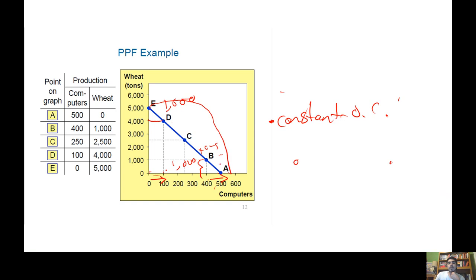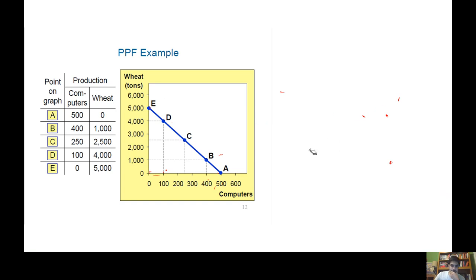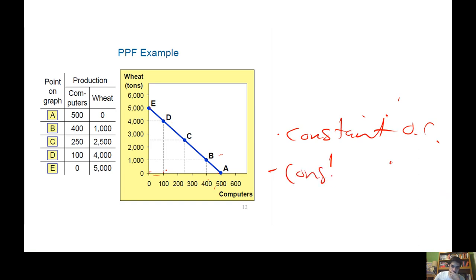Not all PPFs are linear — this is a very unrealistic PPF. A more realistic PPF would be one that's bowed outwards or bowed inwards. We'll talk about why they might be bowed outwards, and we'll talk about returns to scale when we get into Unit 3 on imperfect competition. A constant opportunity cost reflects constant returns to scale.